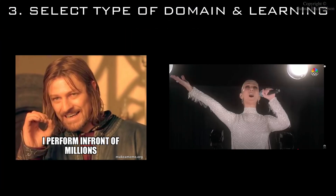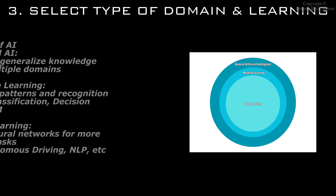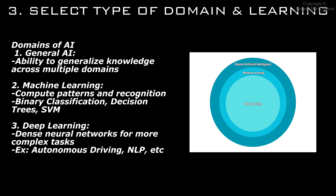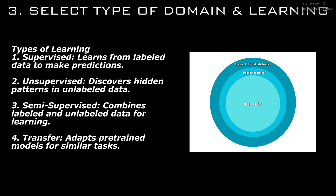Next, we have to select what type of learning we will actually perform, because there are different domains in artificial intelligence — particularly dividing between machine learning and deep learning — and also different types of learning: supervised, unsupervised, semi-supervised, and transfer learning as well.